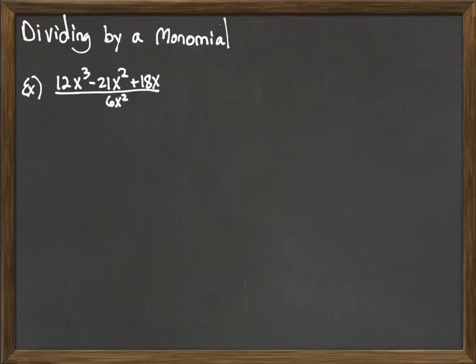What we're going to do to divide by a monomial is distribute that denominator. That's something we can do with a fraction—take the single thing in the bottom and divide it into each thing in the top.